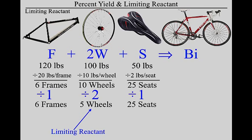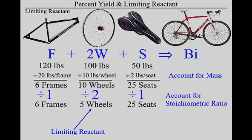The key principles: first you have to account for differing masses — Landon pointed out we need to know how much these parts weigh. In chemistry, we account for differing masses by converting grams to moles. Then we account for the stoichiometric ratio, because bikes don't bolt together one-to-one — there are twice as many wheels needed as other parts. We take these same ideas — accounting for mass and accounting for ratios — and apply them to chemical reactions.